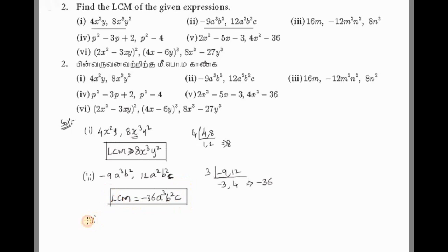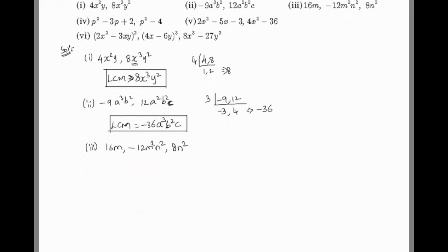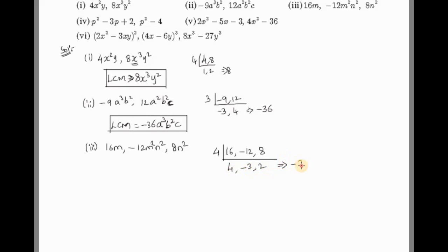The third problem: find the LCM of 16m, -12m²n², and 8n². First, take the numbers: 16, -12, and 8. Using the 4-times table: 4 × 4 = 16, 4 × (-3) = -12, 4 × 2 = 8. So LCM of the numbers is 4 × 4 × (-3) × 2. That gives 16 × (-3) = -48, then -48 × 2 = -96.